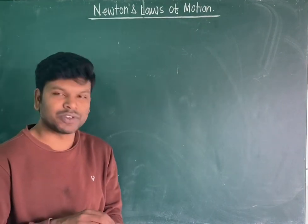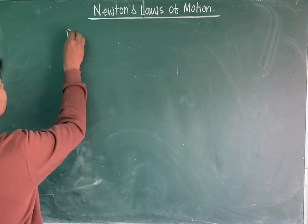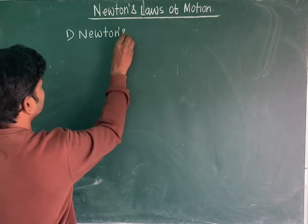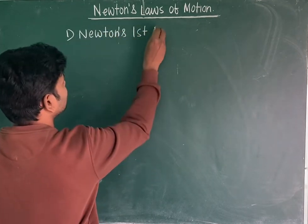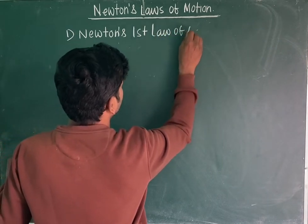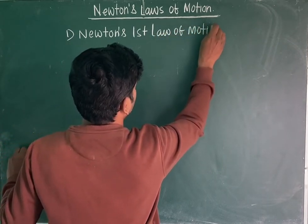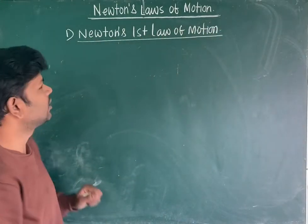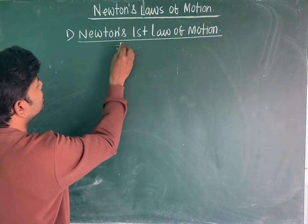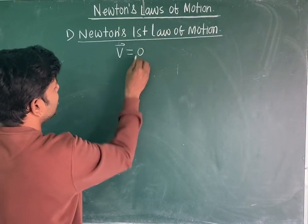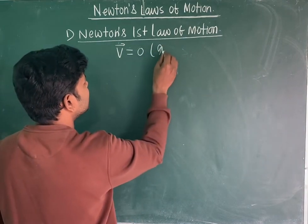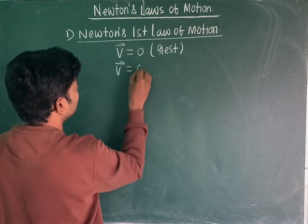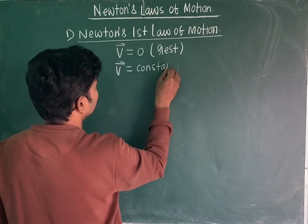I am starting with Newton's first law of motion. Newton's first law of motion is also known as the law of inertia. According to Newton's first law, if any object is initially in the state of rest — meaning the velocity of the object is equal to zero — or velocity V is equal to constant, then the object is in uniform motion.